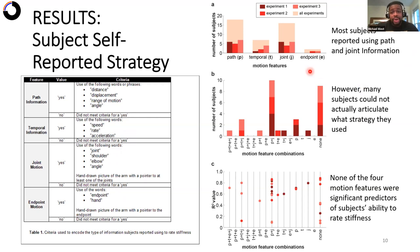And what we found was that most subjects reported using path information and joint information. However, many subjects could not actually articulate what strategy they used. So their response was not codified in any of these ways.